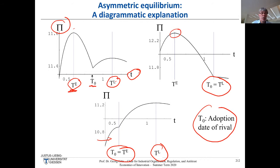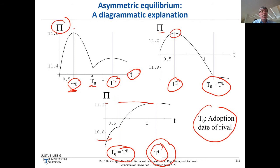What is not so nice about this model is that the early adopter has higher profit than the late adopter — profit of the early adopter is about 12.2 versus 11.2 for the late adopter. So it's always better to be the early adopter. It also took me a long time to understand the non-existence of symmetric equilibrium when I was doing my PhD thesis around 1992.